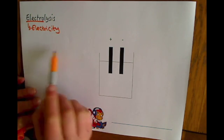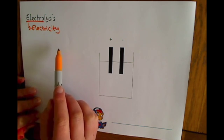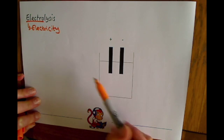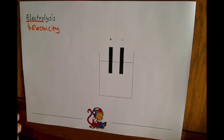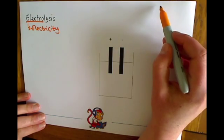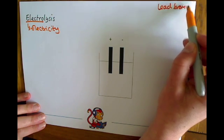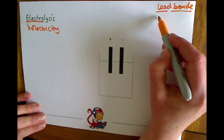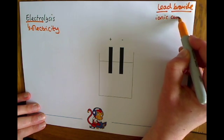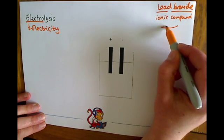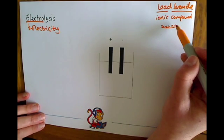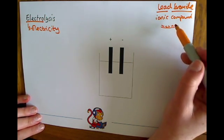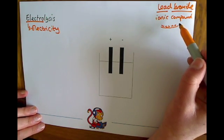If you pass an electric current through certain substances, they will break down into their charged particles and be able to move throughout the substance. Take the example of lead bromide. Lead bromide is an ionic substance — we know that because you've got a metal bonding with a non-metal. Normally it's just a white solid powder, and if you put electrodes into that powder you wouldn't be able to split the compound.